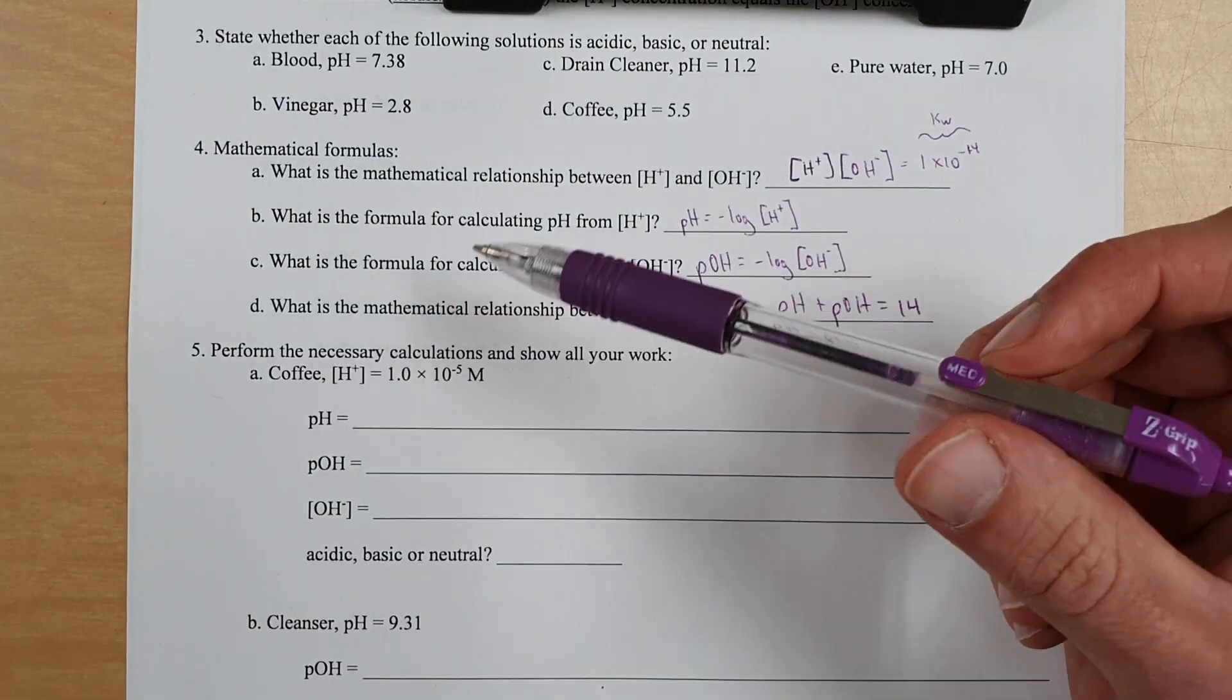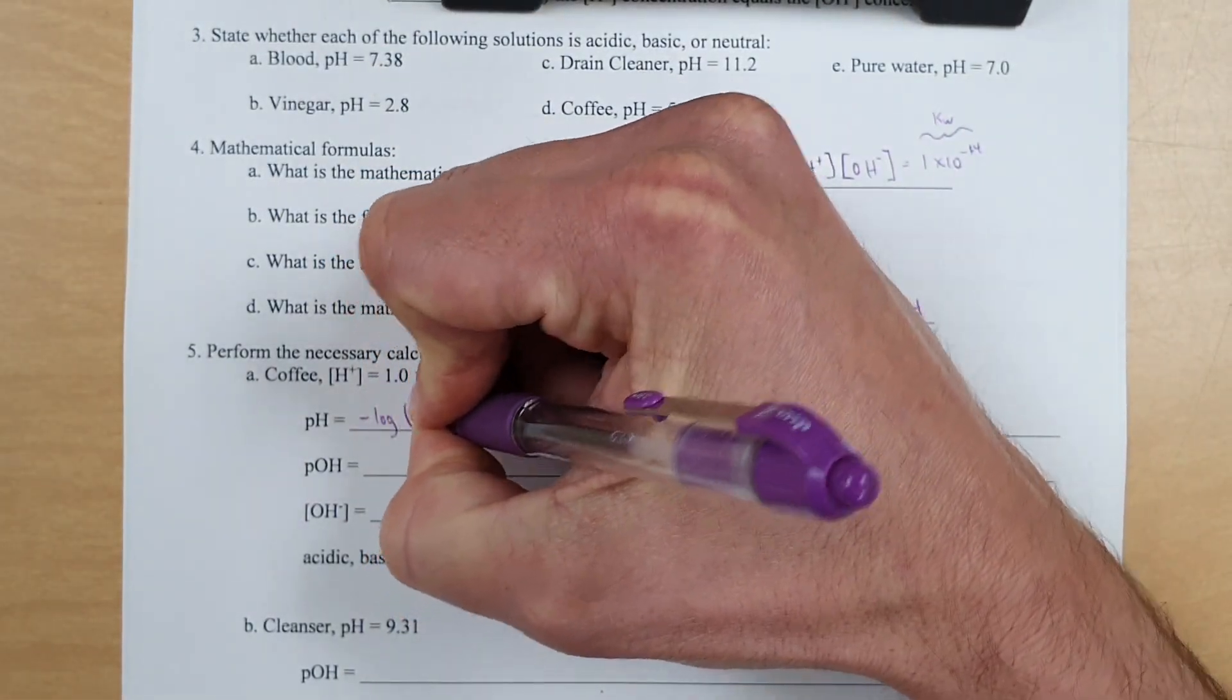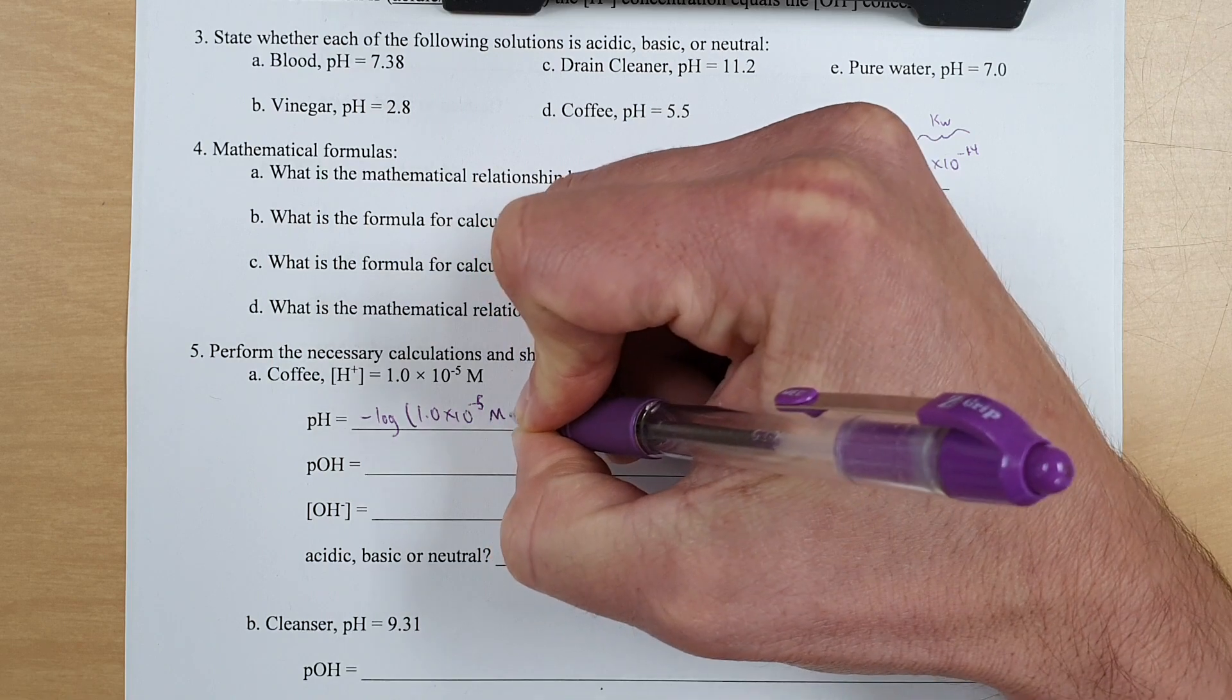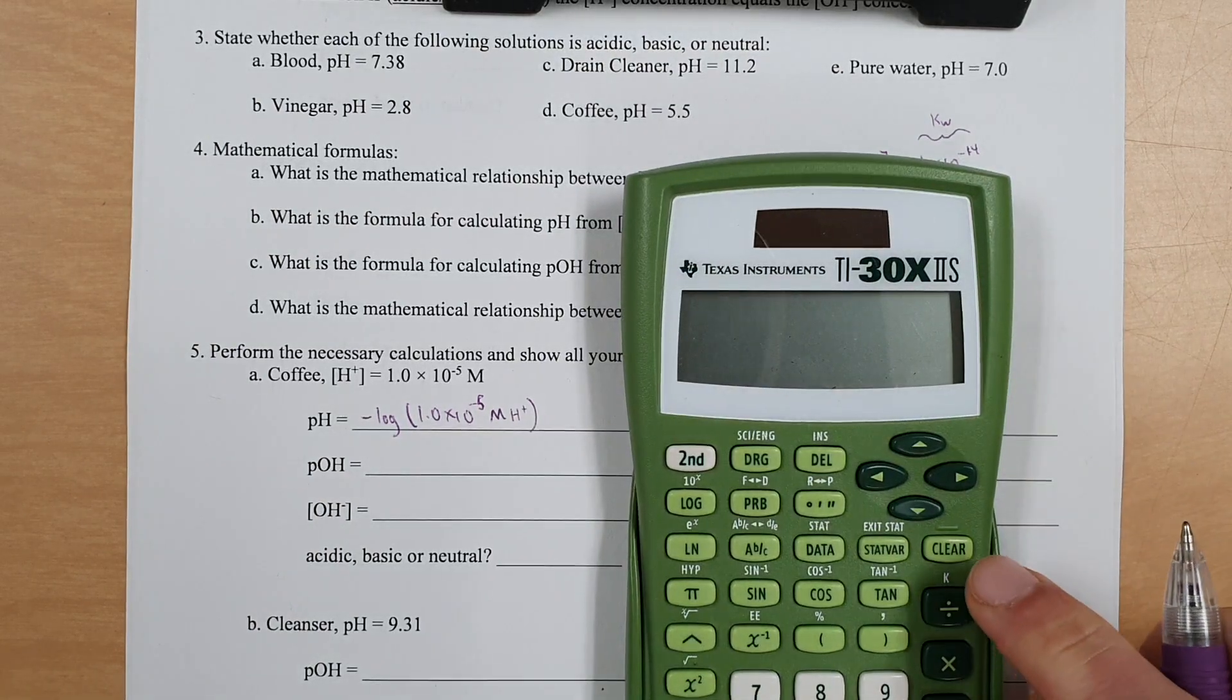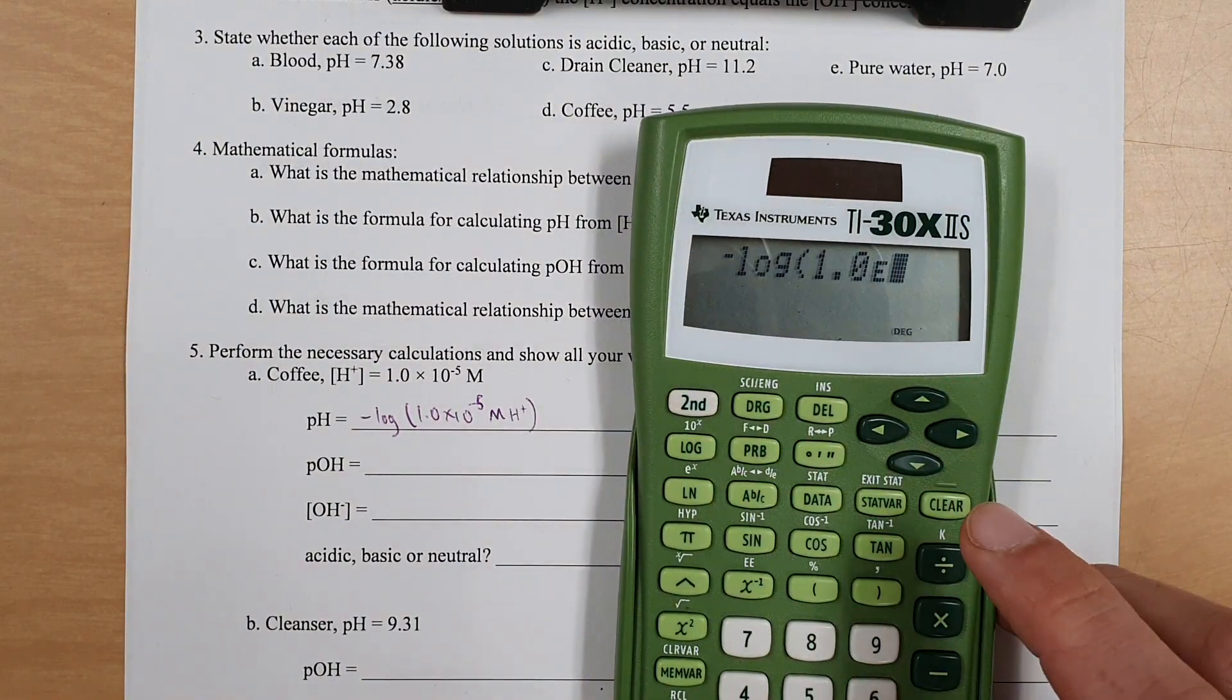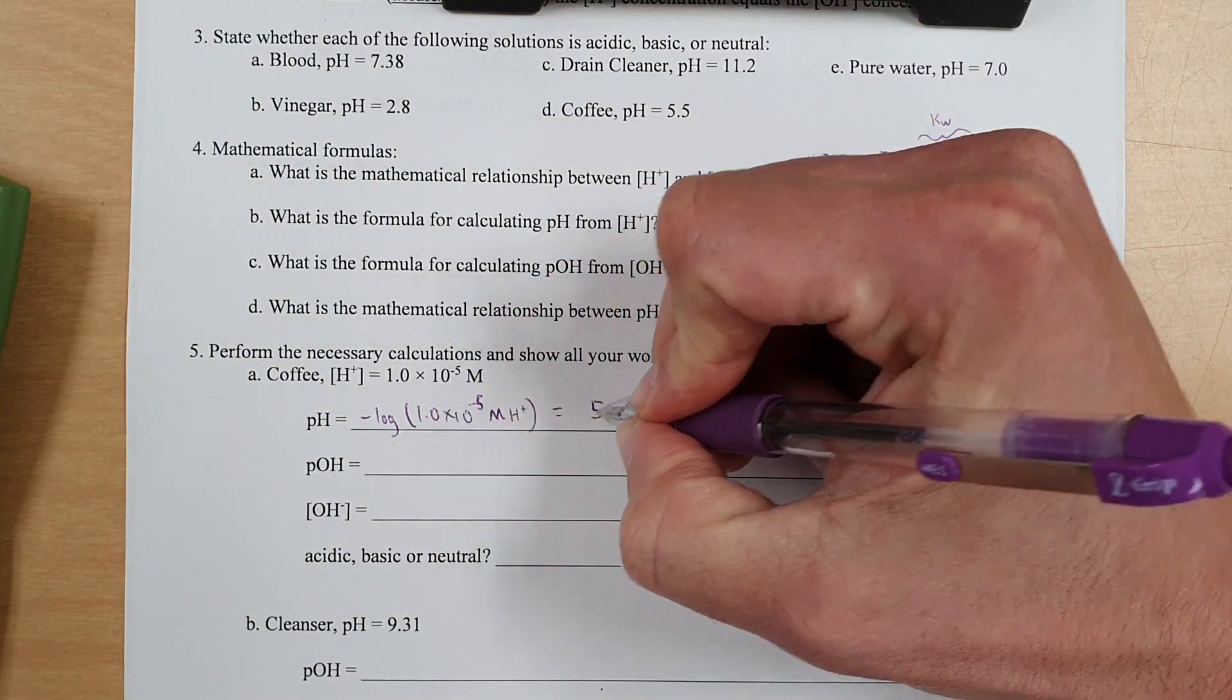So here is one possible way to do it. You can take advantage of this equation, and pH equals the negative log of 1.0 times 10 to the negative 5th. And although it's not strictly necessary, I'm going to do this for clarity. I'm going to add units and chemical identity. Negative log of 1.0 times 10 to the negative 5th is 5.